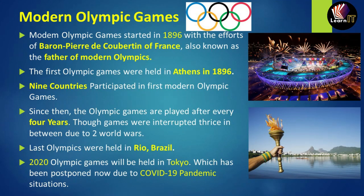The first Olympic games were held in Athens in 1896, in which nine countries participated. Since then, Olympic games are played after every four years, though these games were interrupted thrice due to the two world wars. The last Olympics was held in Rio, Brazil, and the 2020 Olympic games were held in Tokyo, which were postponed due to the COVID-19 pandemic.